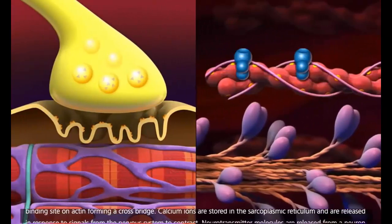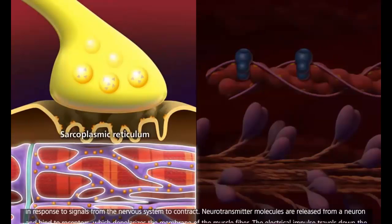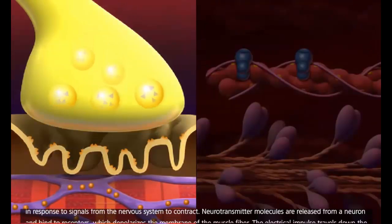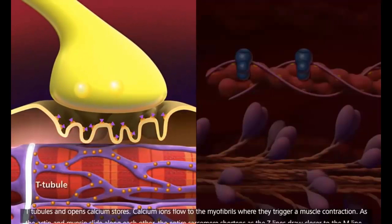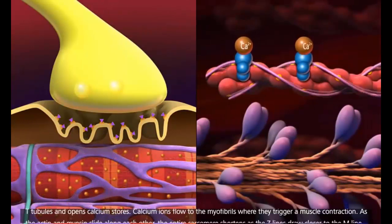Calcium ions are stored in the sarcoplasmic reticulum and are released in response to signals from the nervous system to contract. Neurotransmitter molecules are released from a neuron and bind to receptors, which depolarizes the membrane of the muscle fiber. The electrical impulse travels down the T-tubules and opens calcium stores. Calcium ions flow to the myofibrils, where they trigger a muscle contraction.